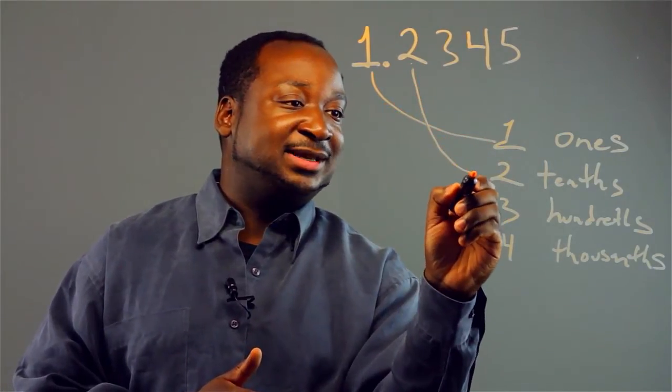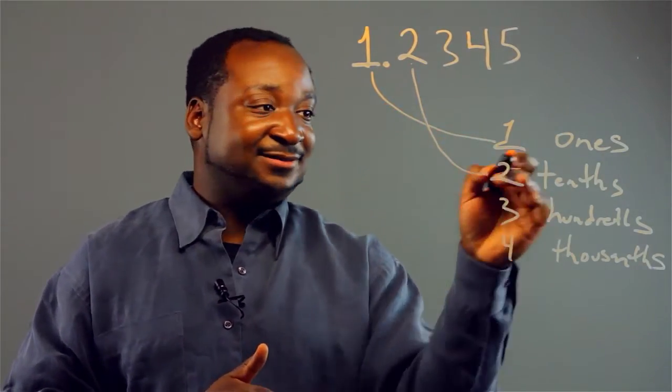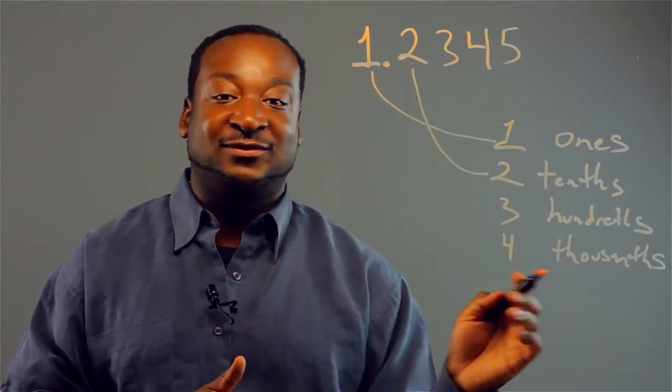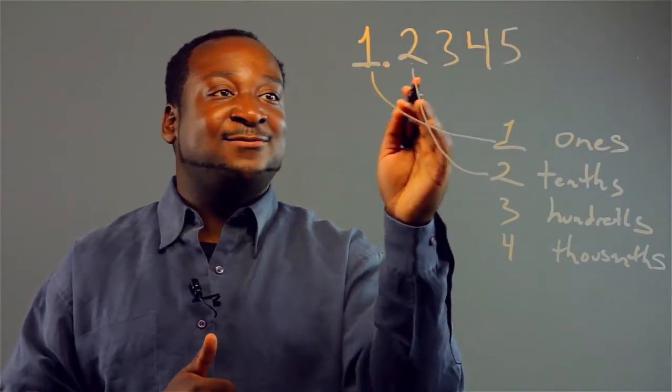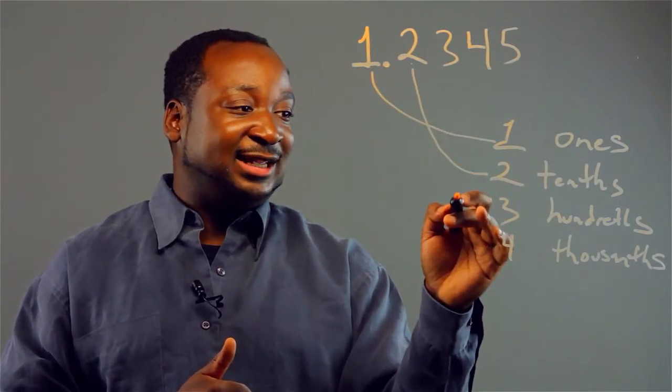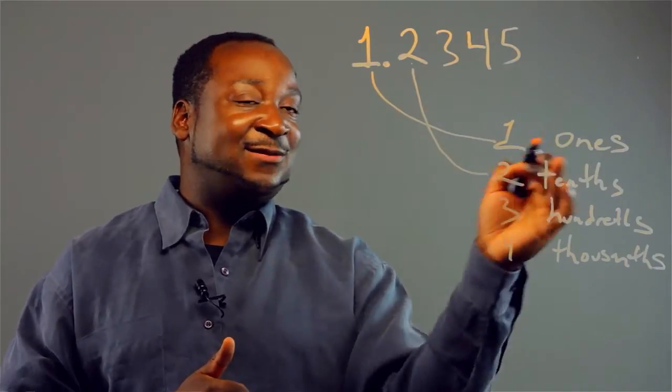So we're just basically counting ones, tenths, hundredths, one, two, three, four, the same way you would have it on the left, ones, tenths, hundredths, the same way on the right.